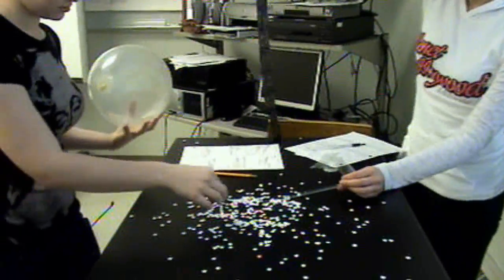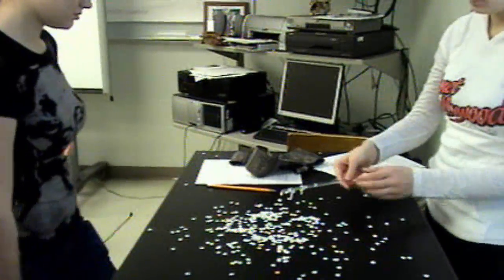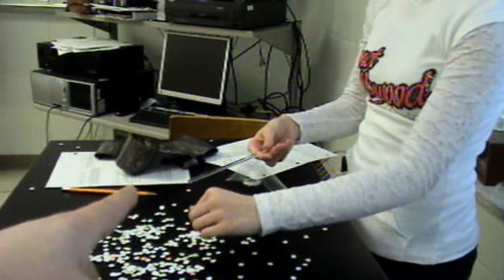Yeah, the balloon. So the confetti picked up a negative charge from the balloon, fell back on the table, and what charge was the glass? Positive. And opposites... So now it's gaining electrons and making the glass neutral or negative while the confetti is becoming positive.